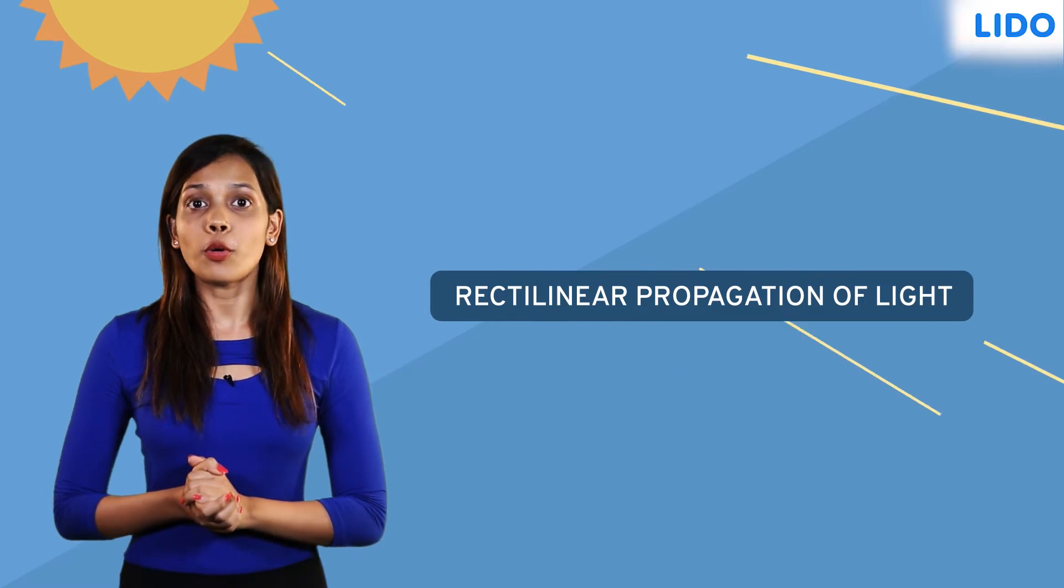Let's find out. Light travels only in a straight line. This property of light is known as the rectilinear propagation of light.